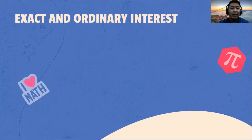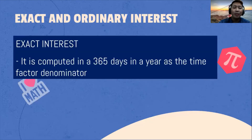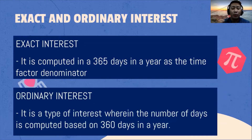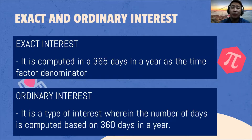What is the difference between exact and ordinary interest? Number one, exact interest is computed using 365 days in a year as the time factor denominator. On the other hand, ordinary interest is a type of interest wherein the number of days is computed based on 360 days in a year.